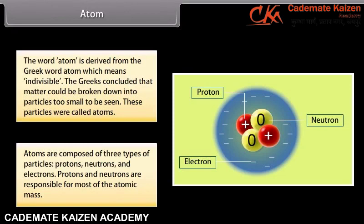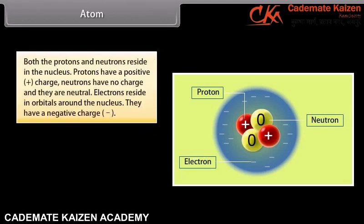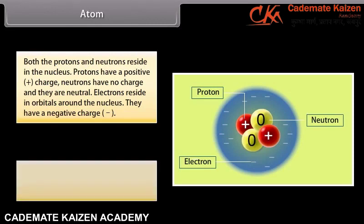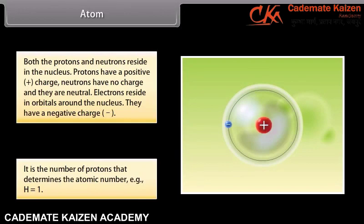Protons and neutrons are responsible for most of the atomic mass. Both the protons and neutrons reside in the nucleus. Protons have a positive charge. Neutrons have no charge and they are neutral. Electrons reside in orbitals around the nucleus and have a negative charge. It is the number of protons that determines the atomic number — for hydrogen, Z is equal to 1.